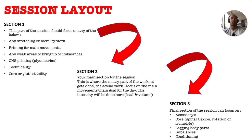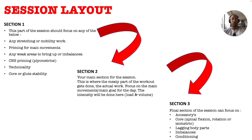Now, finishing on session layout — we've accumulated that information, so how do we apply it to a session and construct something productive? I break things down into three sections. Section one should focus on any stretching or mobility work, priming for main movements, addressing weak areas or imbalances, CNS priming with plyometrics, technique work at lighter weights, and core or glute stability. This is also a good place to put things like calf work or lagging body parts that you'd otherwise skip at the end — put them at the start so you actually get them done.